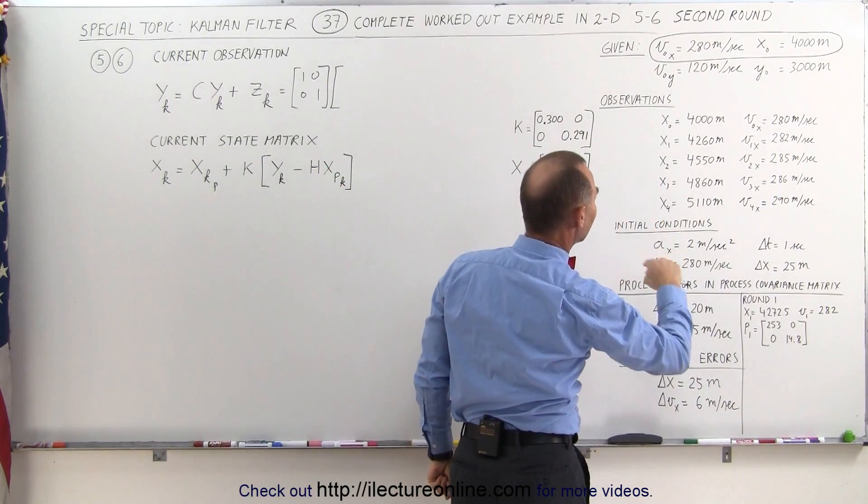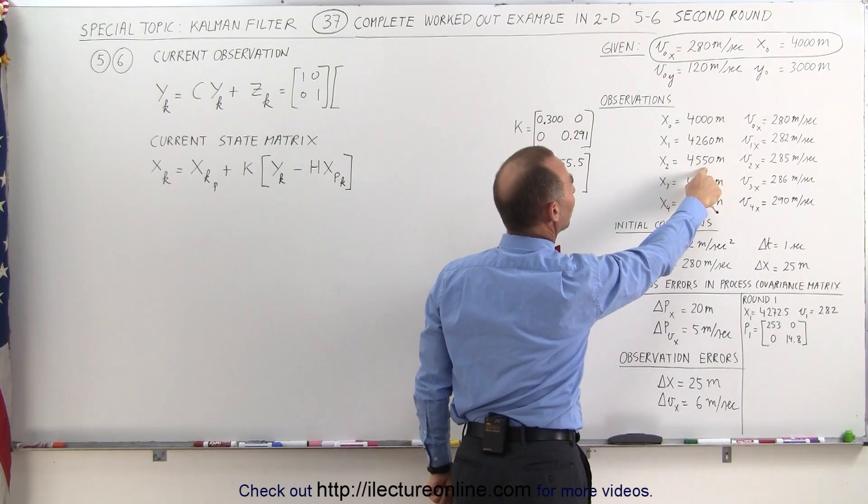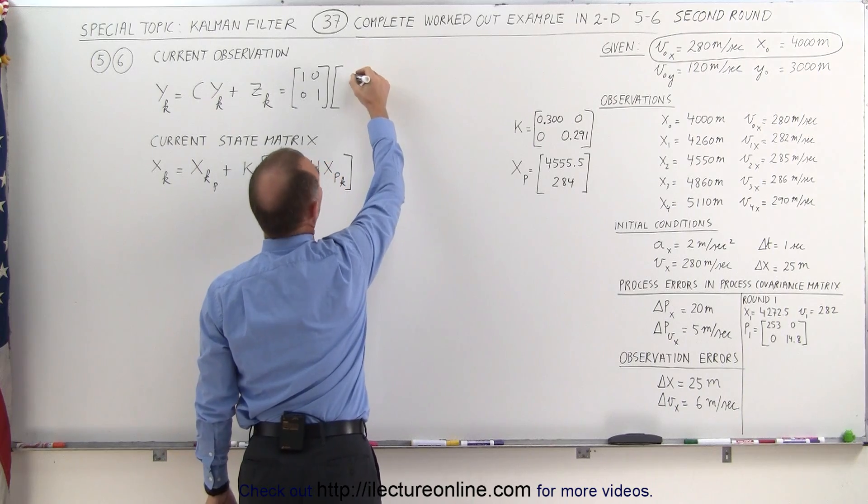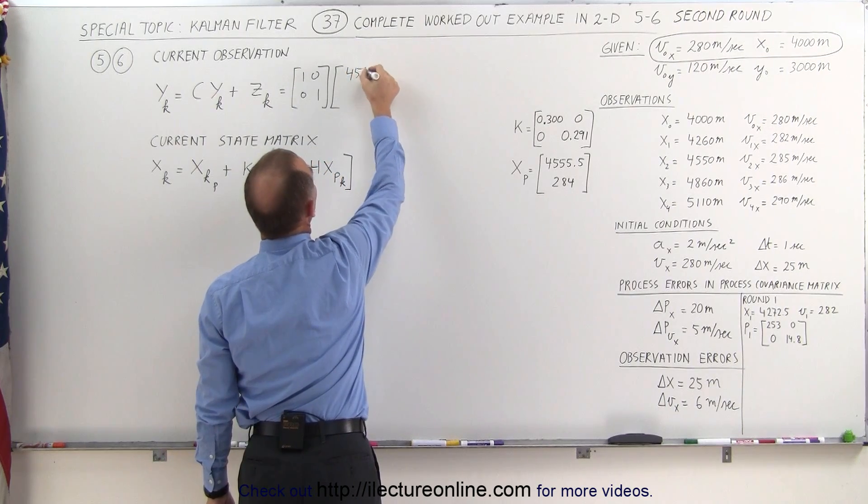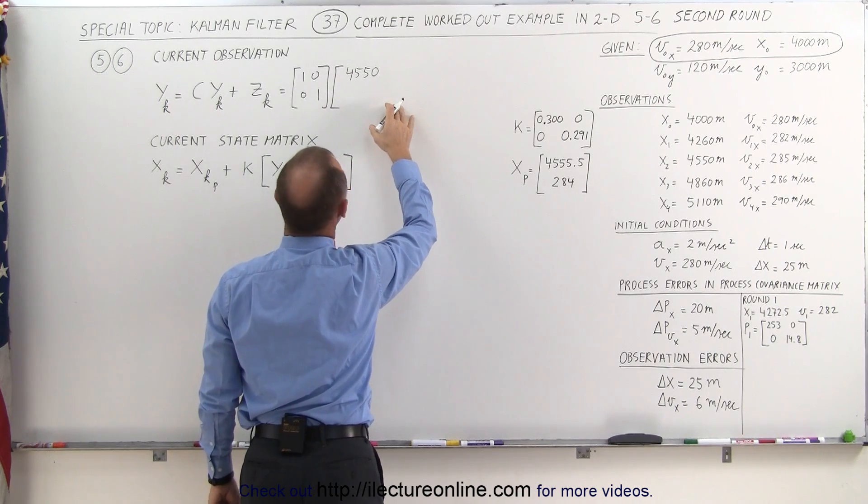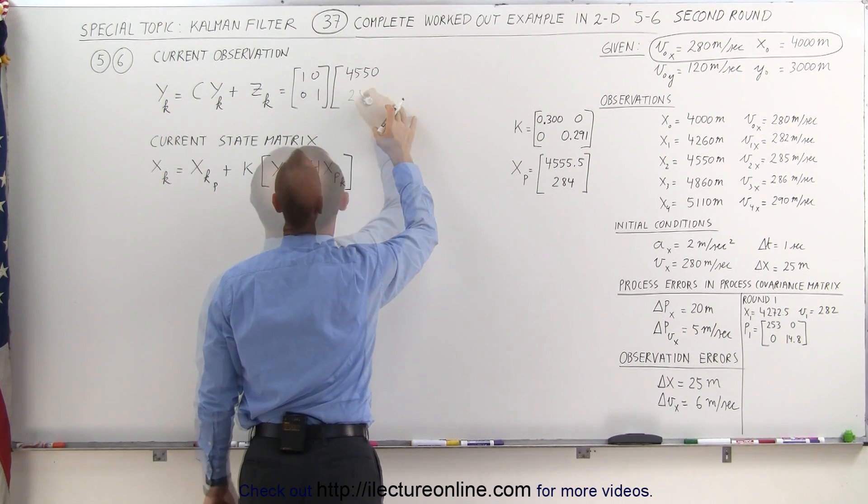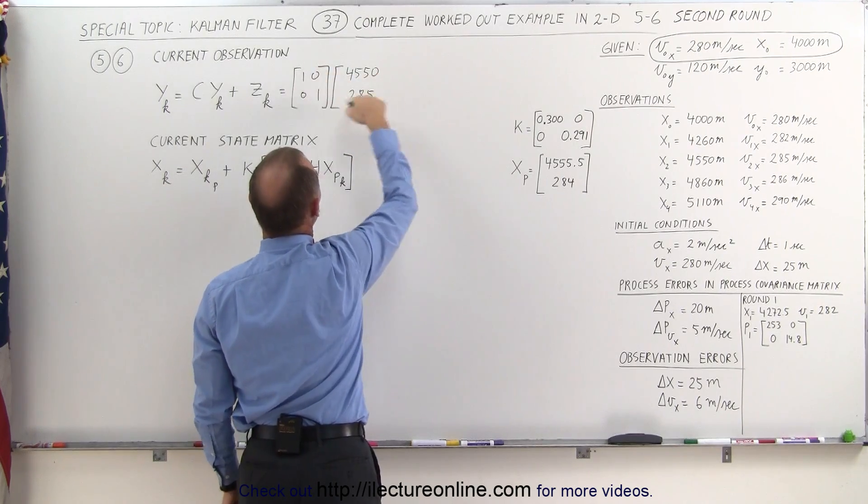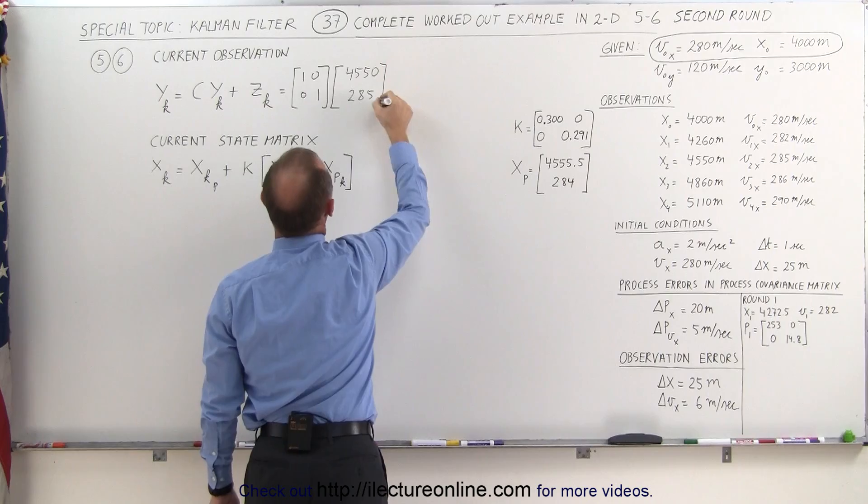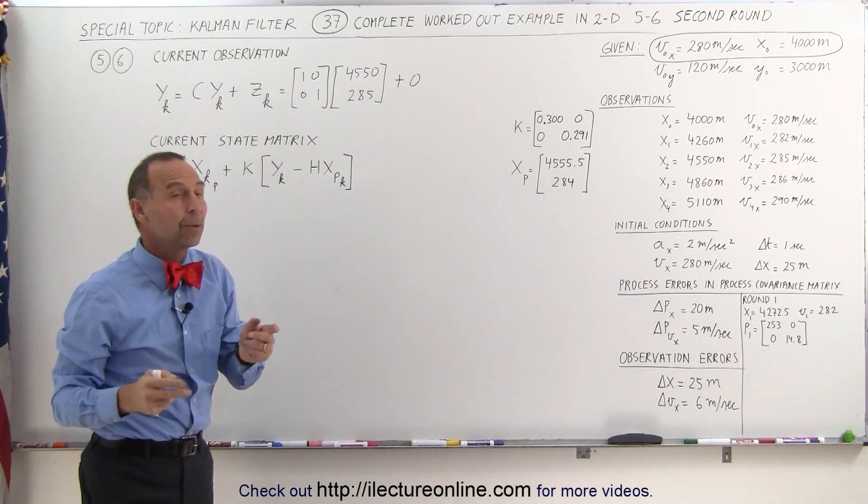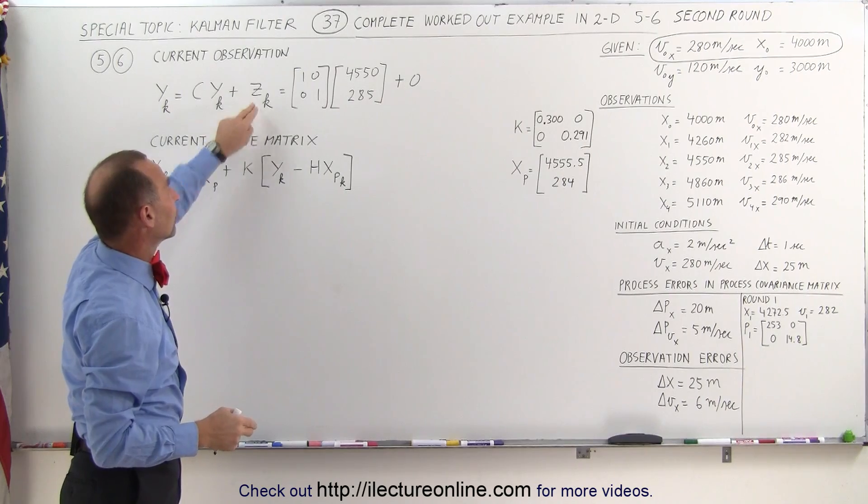And in the position Y is at 4550, velocity of Y is 285 for round 2. So position would be 4550 and velocity is going to be 285. So we have a 2 by 2 and a 2 by 1, which will give us a 2 by 1, which is going to go right here. And we're going to add 0 to that because again, in this example, we're going to call all the errors 0.